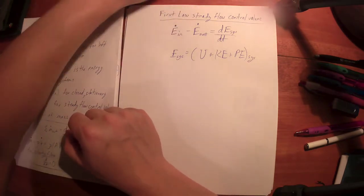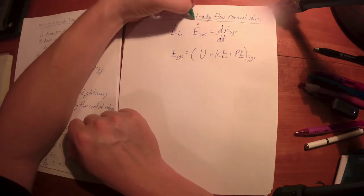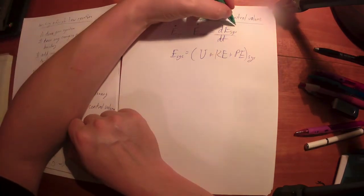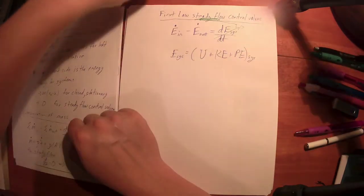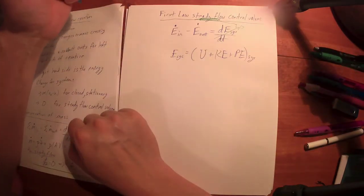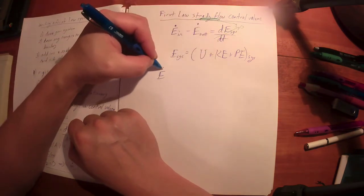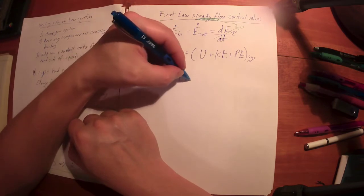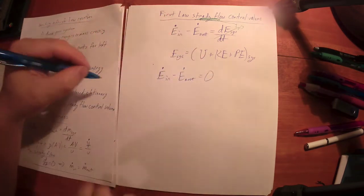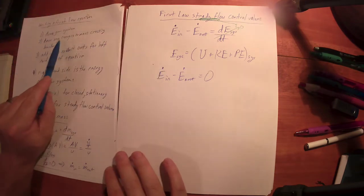If it's steady flow, let's use a green pen here. If it's steady flow, that tells me this goes to zero. So for steady flow, this whole term goes to zero, and that just tells me that the rate of energy in minus the rate of energy out is equal to zero.